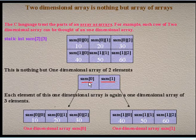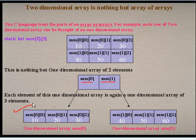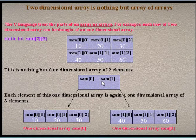Now, each element of this one-dimensional array, SAM[0] and SAM[1], is again a one-dimensional array of three elements. So, SAM[0] is a one-dimensional array with three elements, and SAM[1] is also a one-dimensional array with three elements.